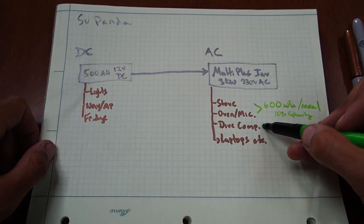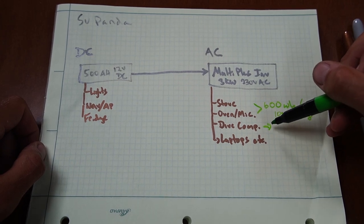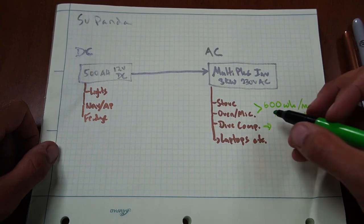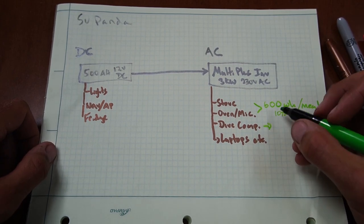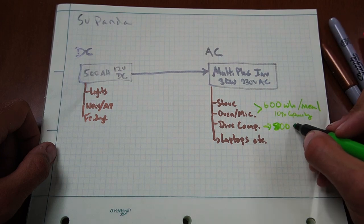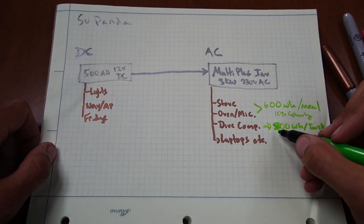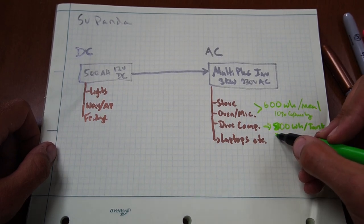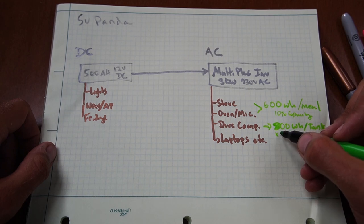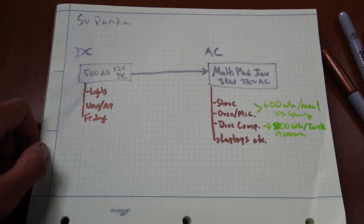Our dive compressor would be the next largest thing. Though the dive compressor we don't obviously use every day. That's only when we're in a place where we're doing lots of diving. But for those who are interested, our dive compressor uses about 800 watt hours per tank. And typically we'll have two tanks. We'll dive with two tanks. So one dive for each of us takes about 1.6 kilowatt hours to fill.